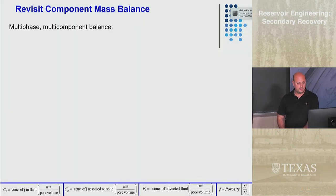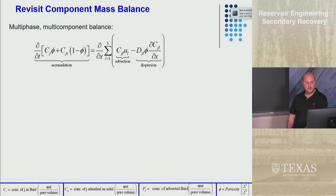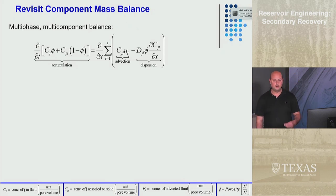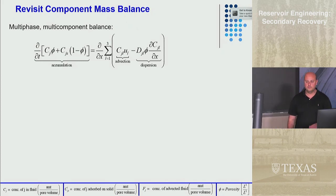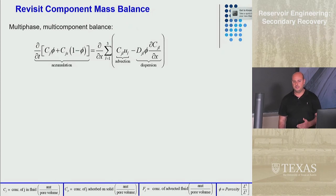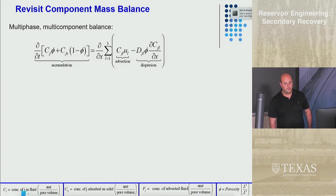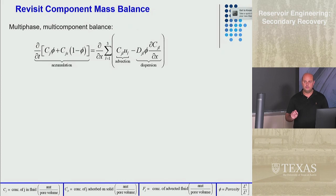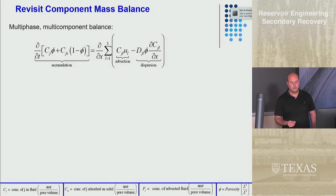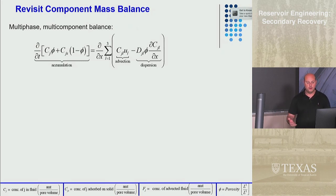We're going to revisit the component balance. We've got a component J — some sort of identifiable molecule or chemical. It could be a polymer, salt, carbon dioxide, or something else. Component J has a concentration, a mass per unit volume — like pounds per barrel, pounds per cubic foot, or grams per cubic centimeter.